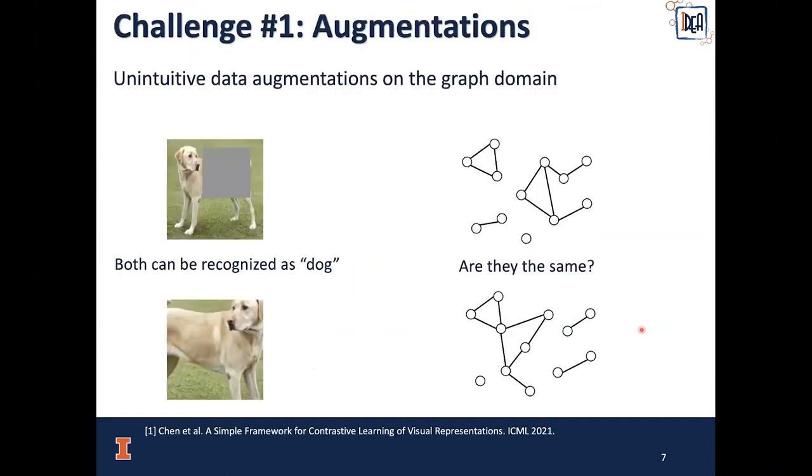However, there are two challenges for this data augmentation-based Graph Contrastive Learning method. First, data augmentation on the graph domain is not as intuitive as on the visual domain. For example, on the left-hand side, we have two pictures which are both heavily perturbed, but we can still recognize them as instances of a dog from our human intuition. However, on the right-hand side, we have two graphs, but there's no way for us to tell whether they are the same or have the same distribution.